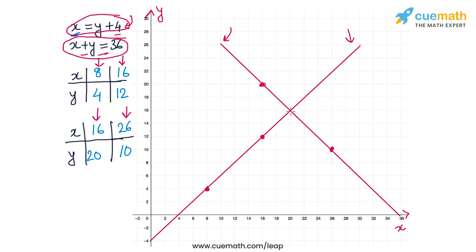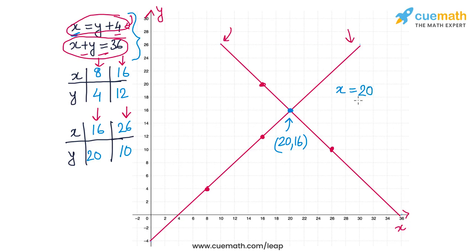We can see that the two lines intersect at the point (20, 16). The coordinates of this intersection point give us x = 20 and y = 16, so the length of the rectangle is 20 meters and the breadth is 16 meters.